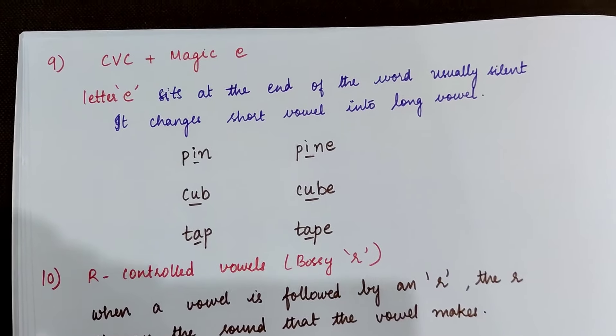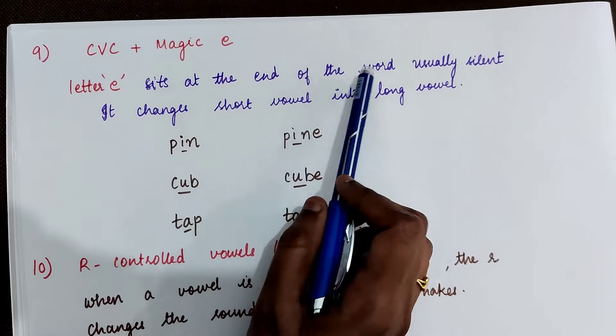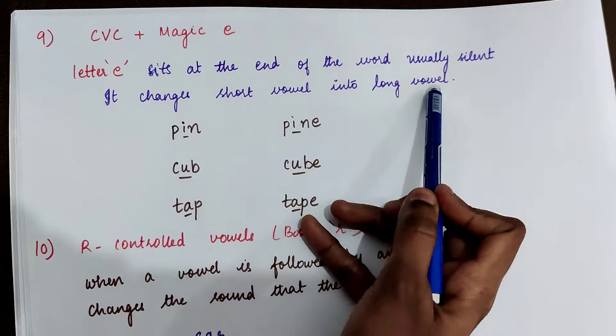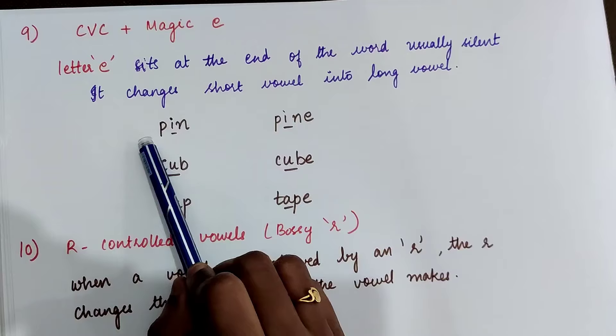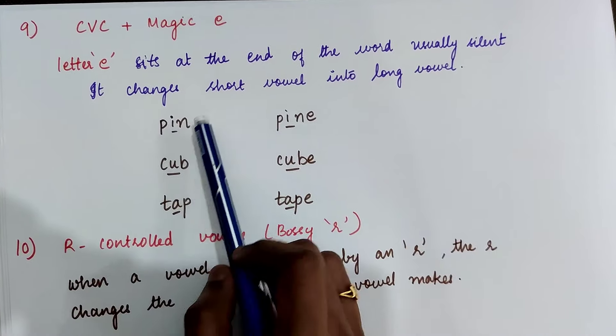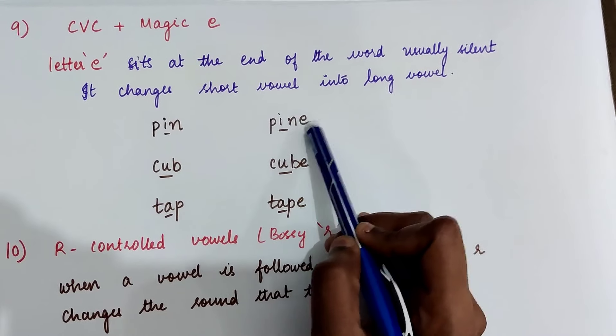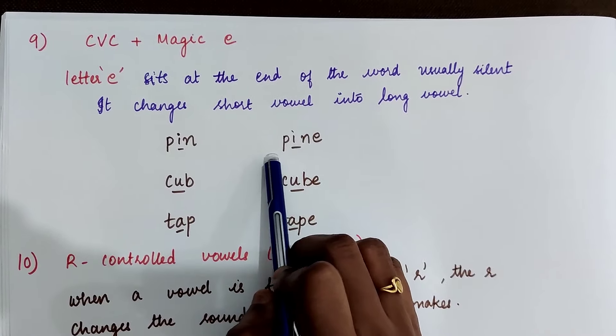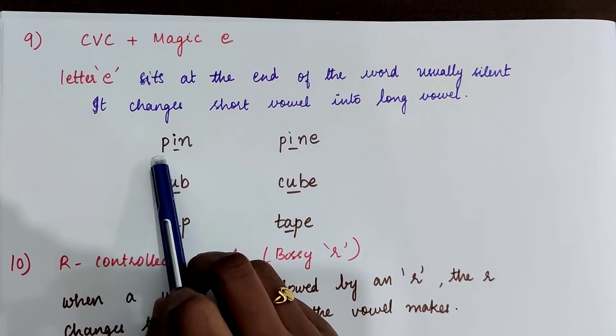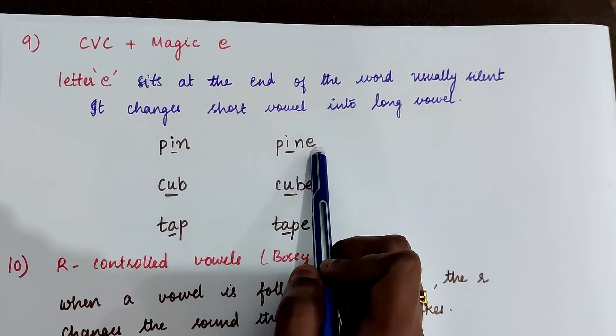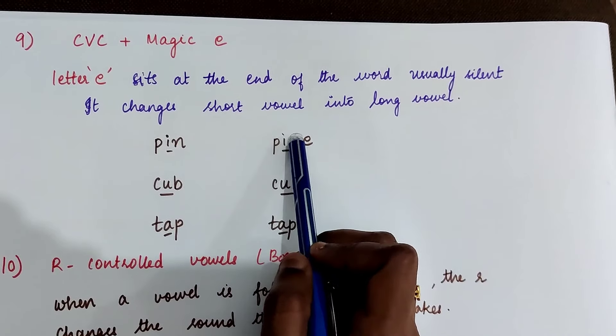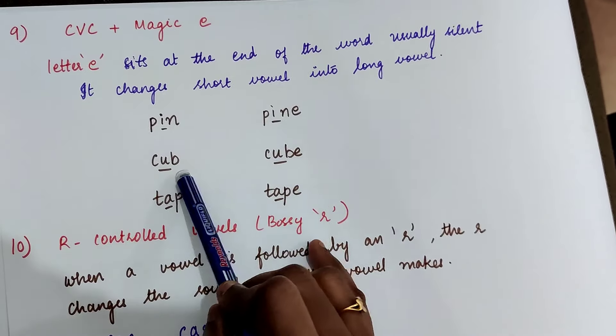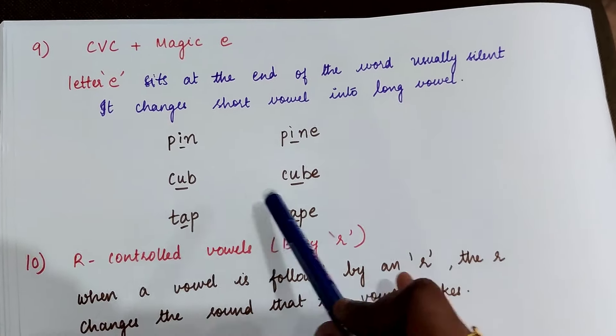The next is magic e rule. So when the letter e sits at the end of the word, it becomes silent, and it changes the short vowel into long vowel. For example, here in pin, we have the short vowel i. Whereas when we add e at the end, the e becomes silent and the i takes the long vowel sound, as in pine. So we can see the difference. It's pin and pine. So the e here changes the short vowel into long vowel. That's why it's called magic e. Another example is cub, cube. Tap, tape.